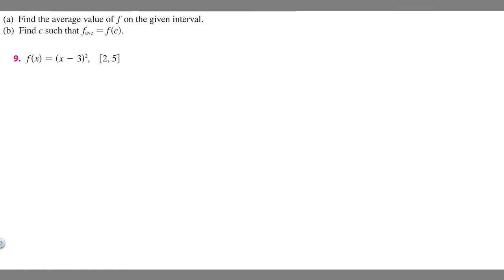In this problem, we're told to find the average value of f on the given interval and find c such that f average is equal to f of c. We were told that f of x equals x minus 3 squared, and our interval is going to be from 2 to 5.